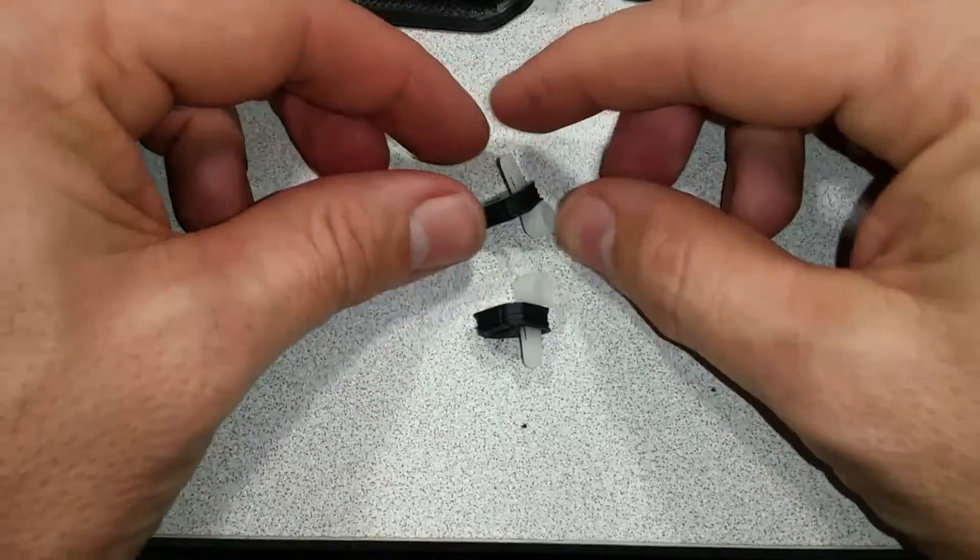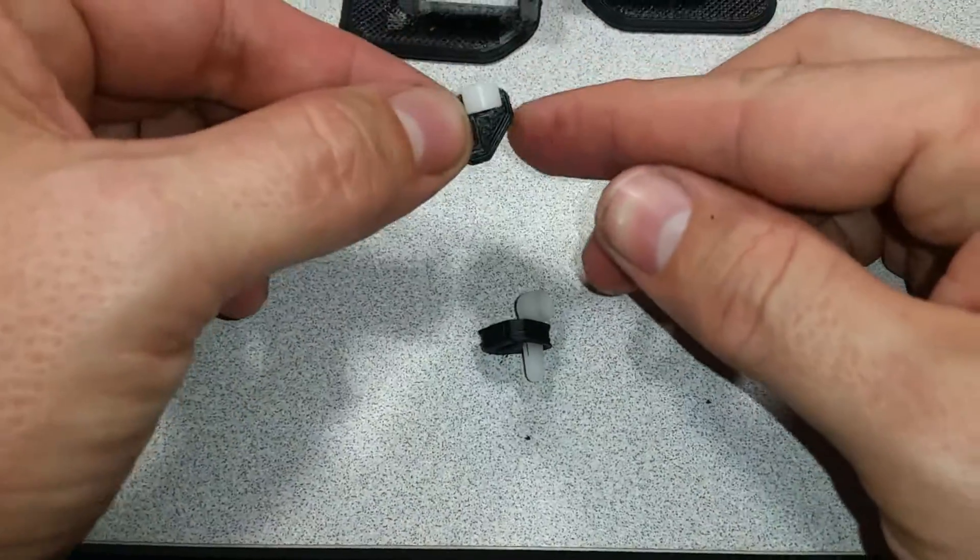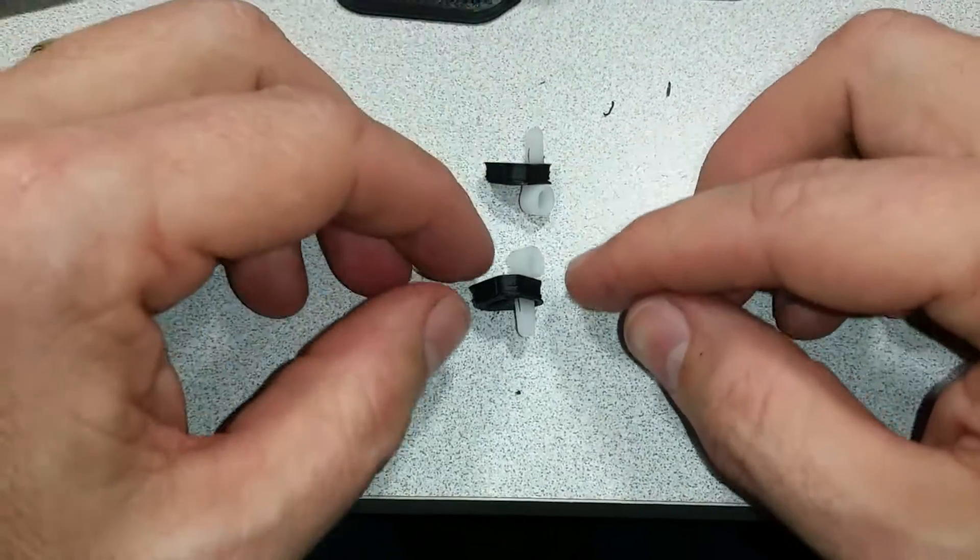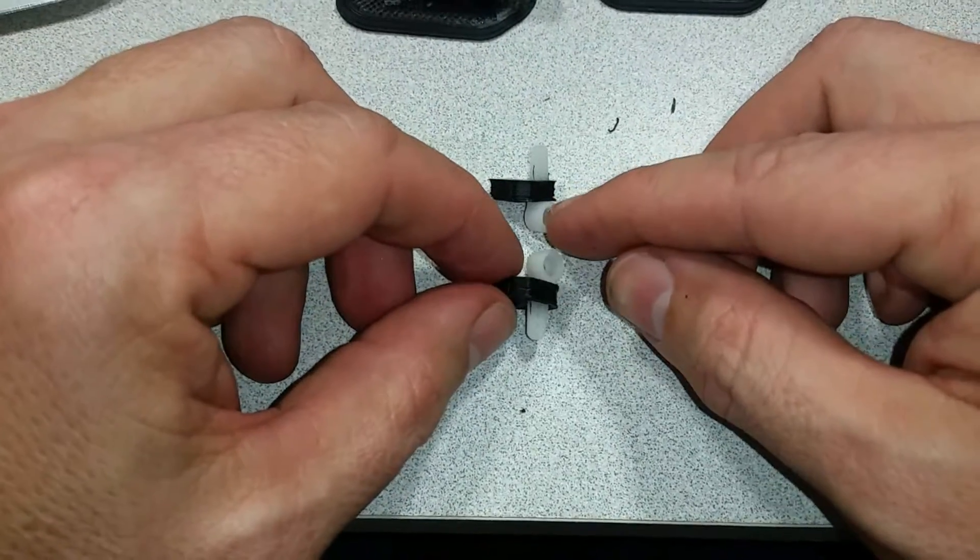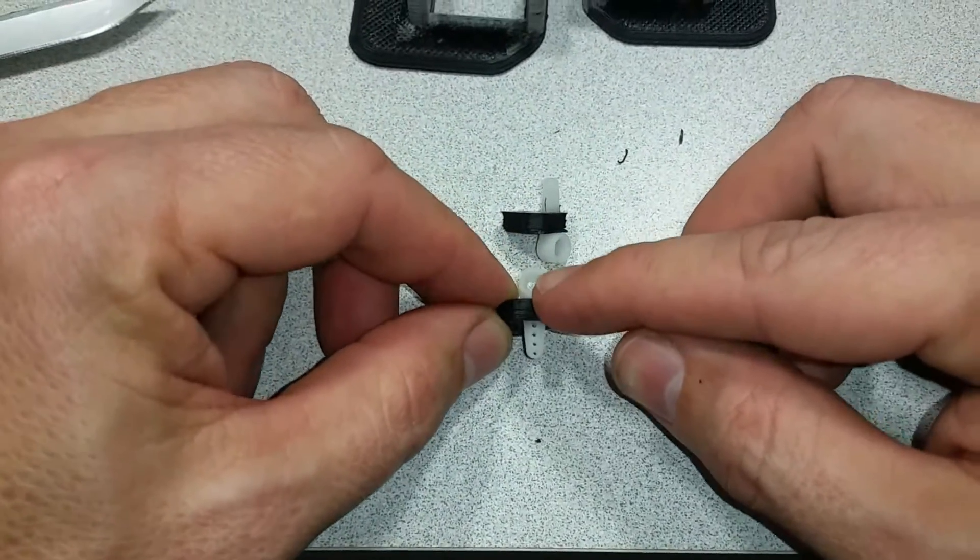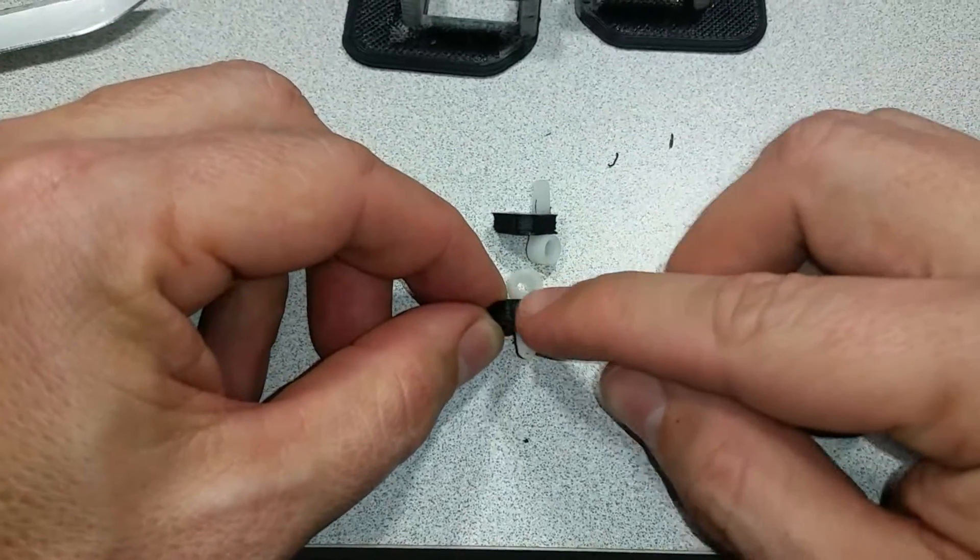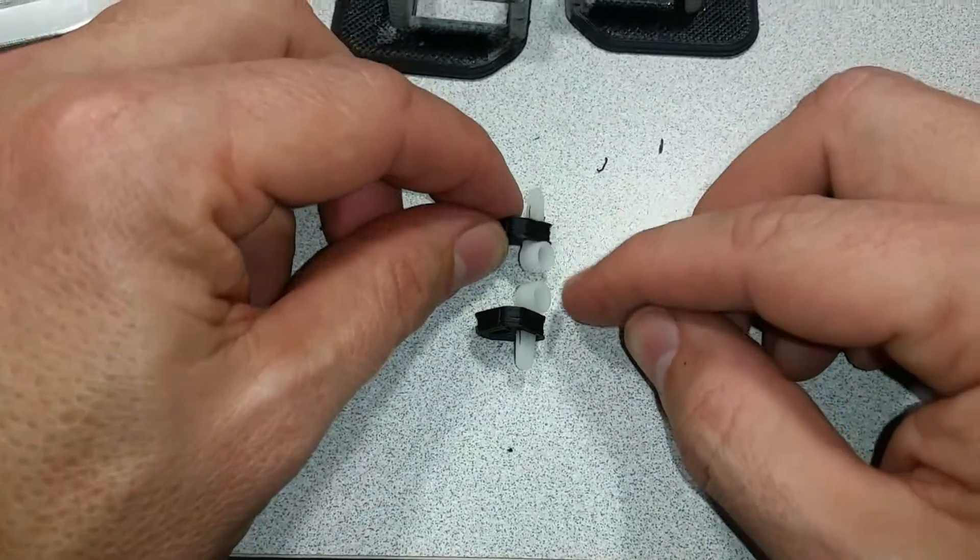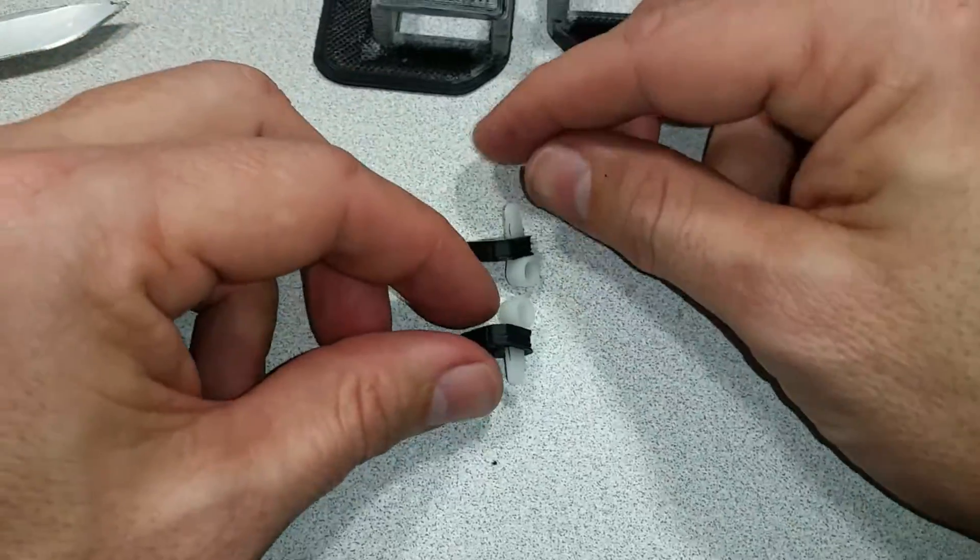Once you have those two arms in, if you have the beveled end facing down, you should have the geared side facing towards the outside edge and a mirror image of each other.